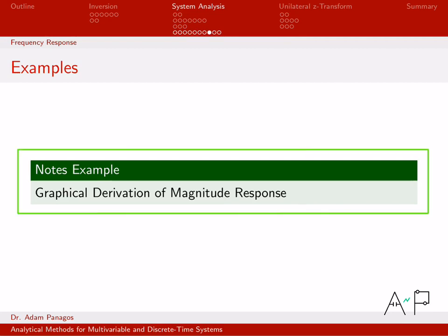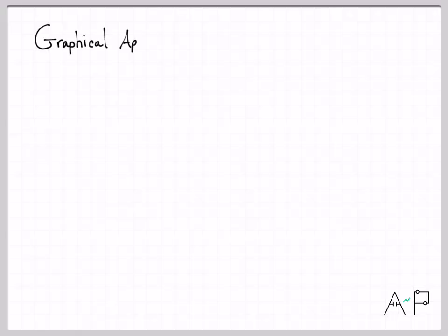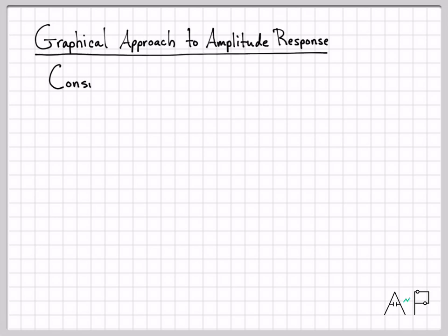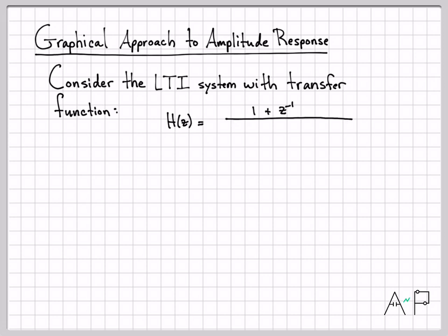Graphical derivation of the magnitude response of a discrete time LTI system. We're going to work with a very specific system here, and the system we're going to work with is given by this transfer function. H of z is equal to one plus z to the negative one on the numerator.